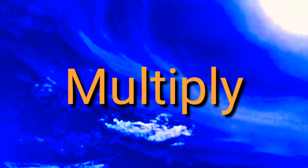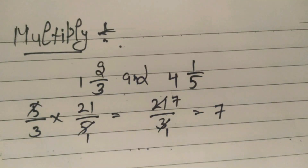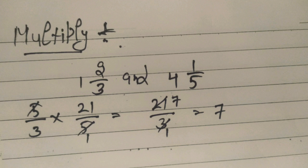Next: multiply two rational numbers given as mixed fractions. First convert to improper fractions: 3 and 2/3 becomes (3×3 + 2)/3 = 11/3... wait — 3×3 = 9, 9+2 = 11, so 11/3. The second: 4 and 1/5 becomes (4×5 + 1)/5 = 21/5. Cancel 3 from numerator and denominator: 21/3 = 7, giving the final answer 7.